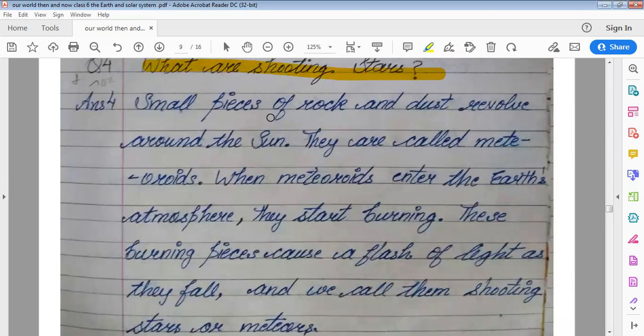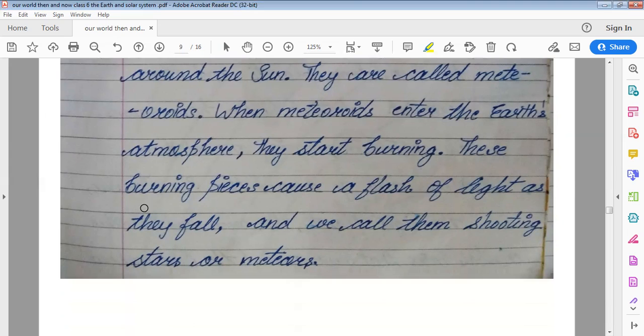What are shooting stars? Small pieces of rocks and dust revolve around the sun. They are called meteoroids. When meteoroids enter the earth's atmosphere they start burning. These burning pieces cause a flash of light as they fall and we call them shooting stars or meteors.